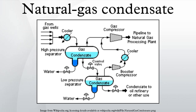The raw natural gas from the high pressure separator is sent to the main gas compressor. The gas condensate from the high pressure separator flows through a throttling control valve to a low pressure separator. The reduction in pressure across the control valve causes the condensate to undergo a partial vaporization referred to as flash vaporization. The raw natural gas from the low pressure separator is sent to a booster compressor, which raises the gas pressure and sends it through a cooler and onto the main gas compressor.